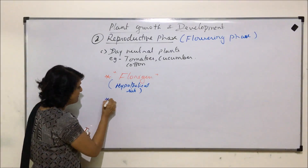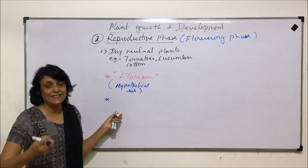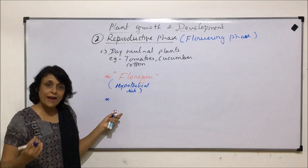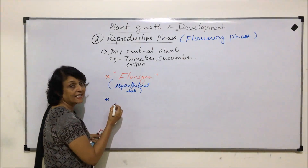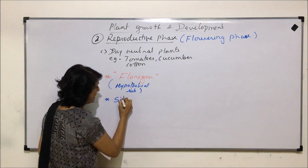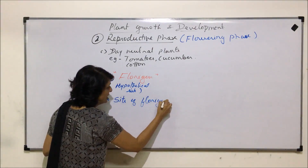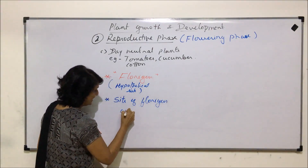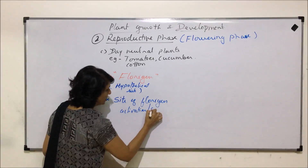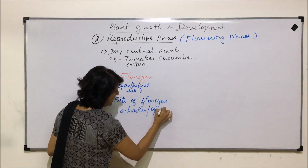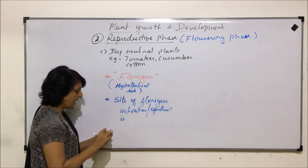The site where this florigen is present and gets synthesized or activated in the presence of light is the leaf. So the site of florigen activation or synthesis is the leaf.